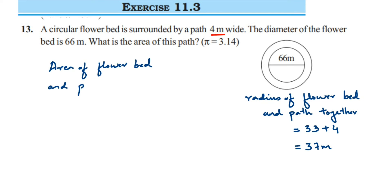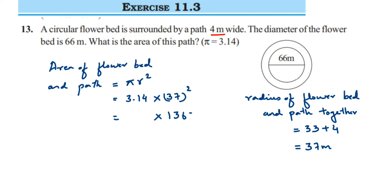The area of the flower bed plus path equals pi r squared. Pi is 3.14 and r is 37 meters. 37 squared equals 1369, and multiplying 1369 by 3.14 gives 4298.66 square meters. Now we have both areas and just need to subtract them.